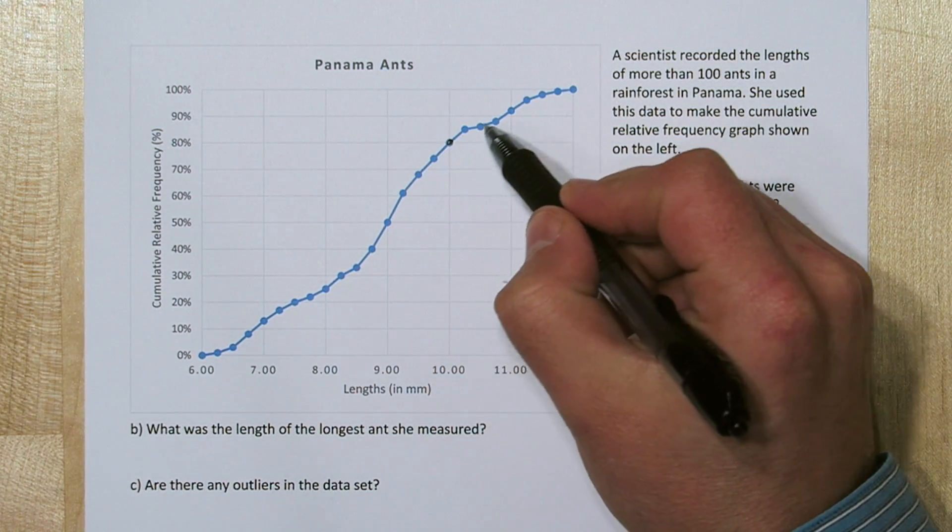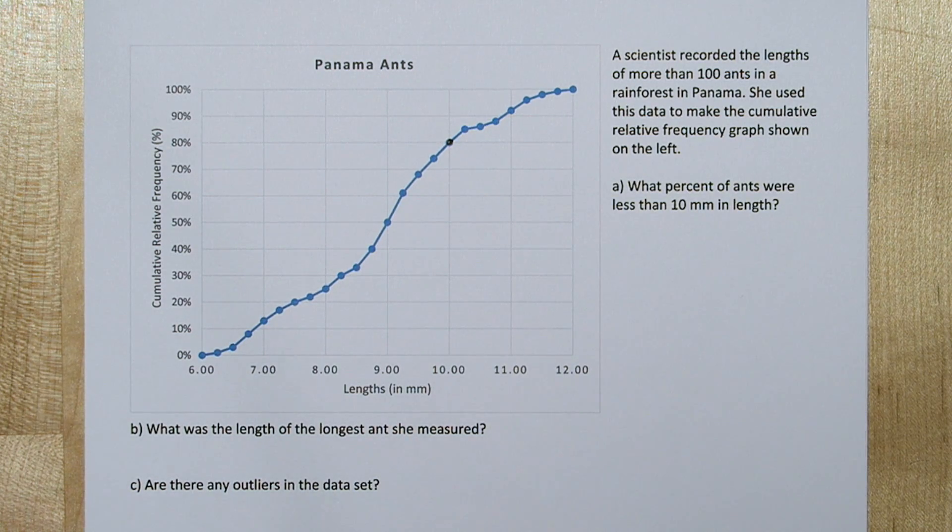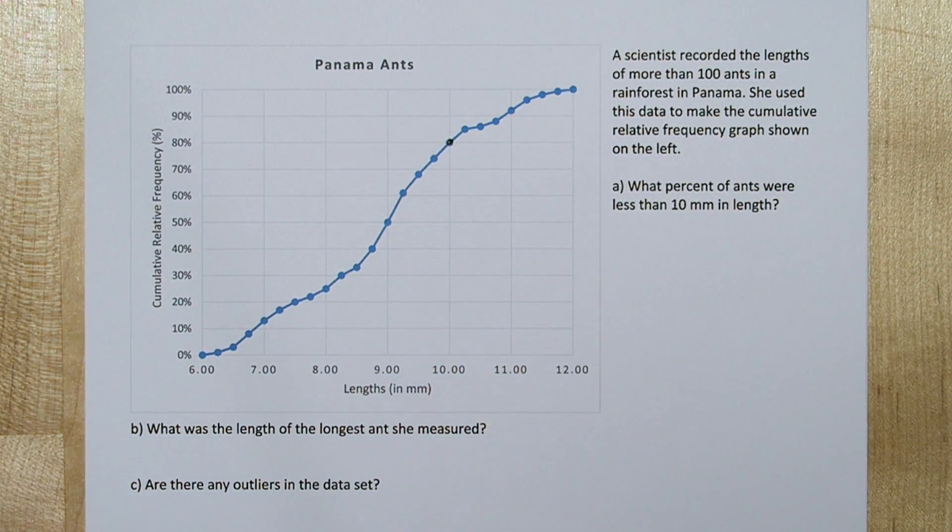So if you look at each of the x-coordinates here, they represent a length in millimeters of ants. And the y-coordinate is what proportion of ants or what percentage of ants are less than that measurement.